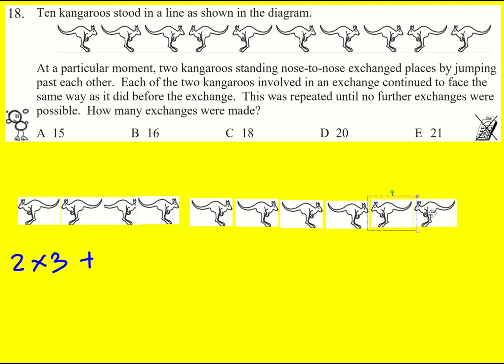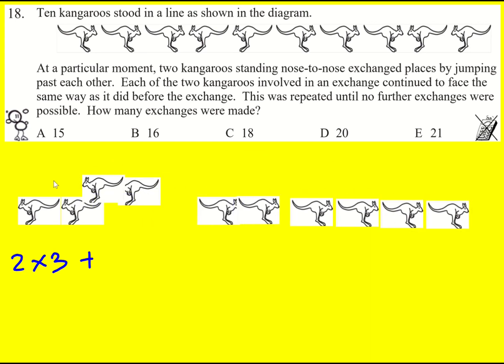Now in a similar way, I've got these two, and they're both going to have six exchanges. One, two, three, four, five, six, and then another six here, and then these will move along. So I'm going to add on two times six.